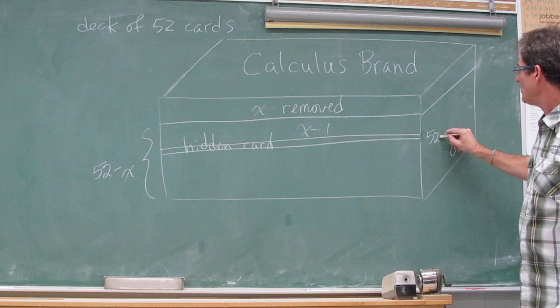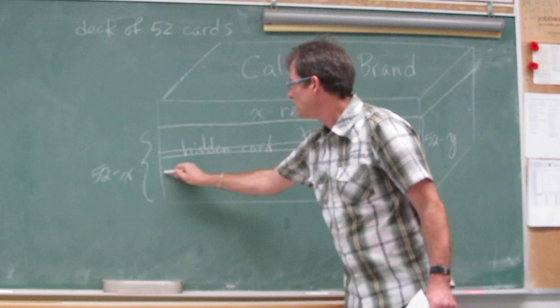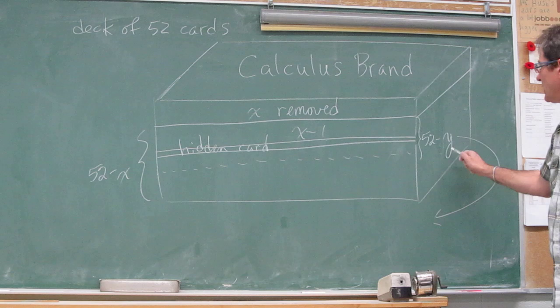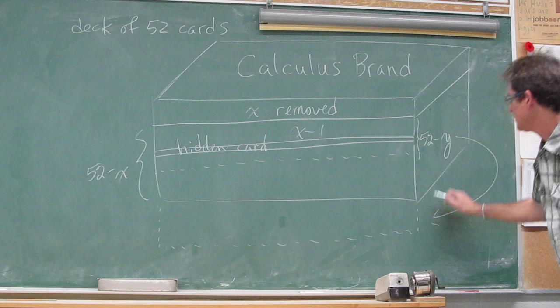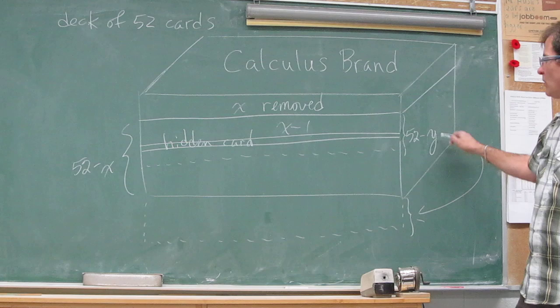And what I did was I took 52 minus Y cards from here, and I placed them at the bottom of the deck. Whatever his number was, I subtracted from 52, and I took that many cards. I did it one at a time. I could have done them all together. And I moved them to the bottom of the deck, moving the deck down here. So this number here is also 52 minus Y.